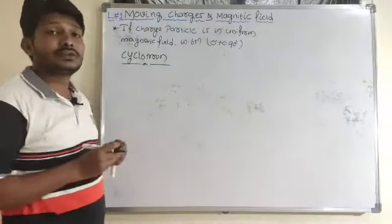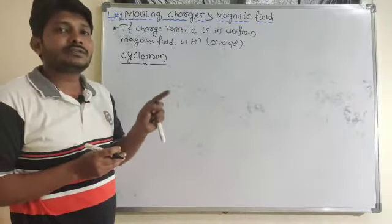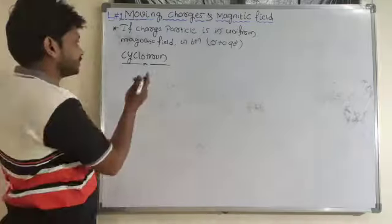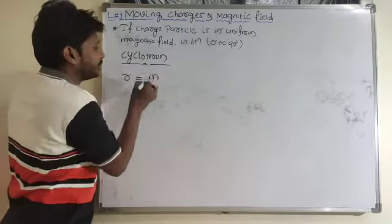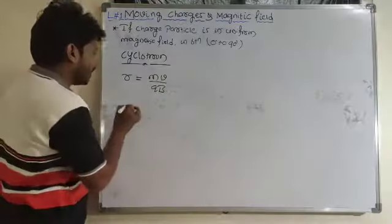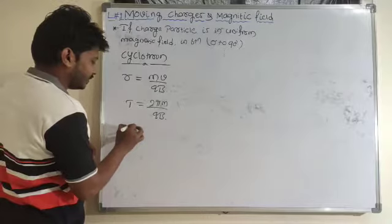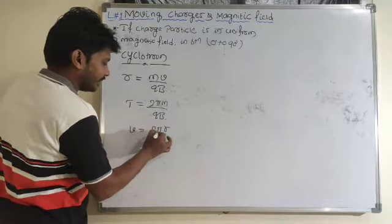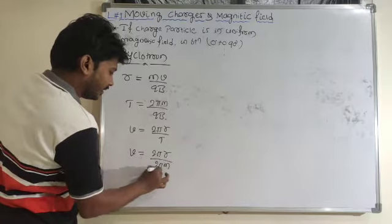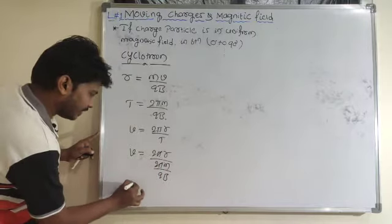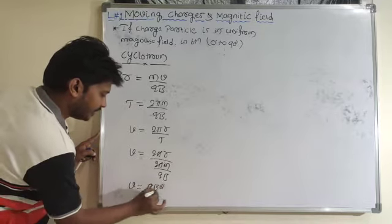The cyclotron is a device used to accelerate heavy charge particles like protons. If the charge particle is perpendicular to the magnetic field, the radius and time period equations apply: T = 2πm/qB. The velocity of the charge particle is v = 2πr/T = qBr/m.